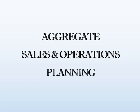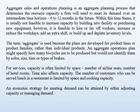Aggregate sales and operations planning is an aggregate planning process that determines the resource capacity a firm will need to meet its demand over an intermediate time horizon, 6 to 12 months in the future.